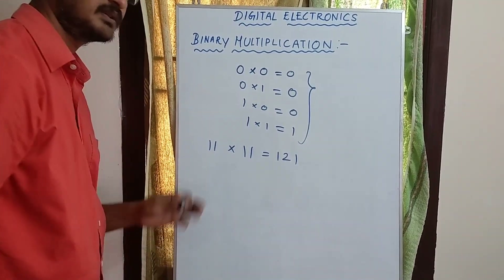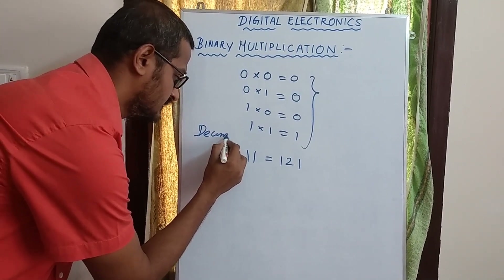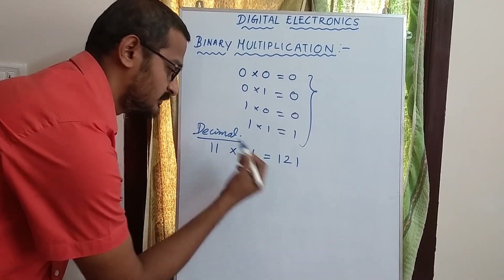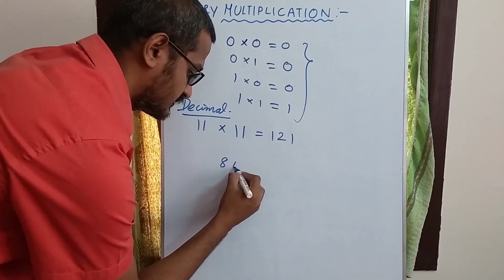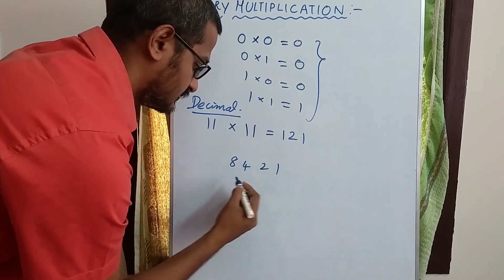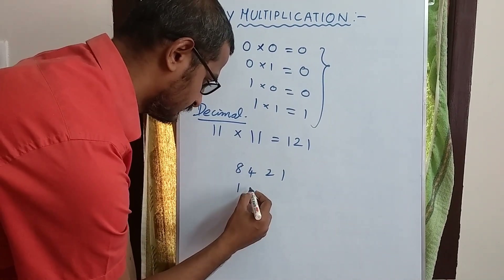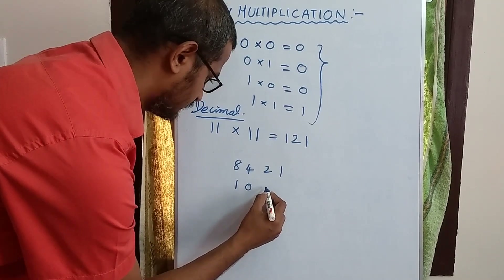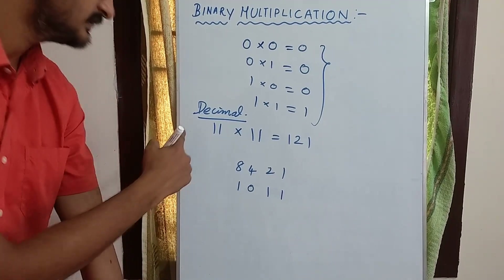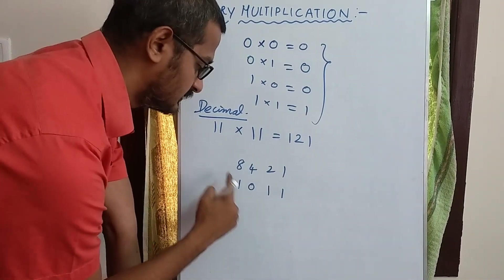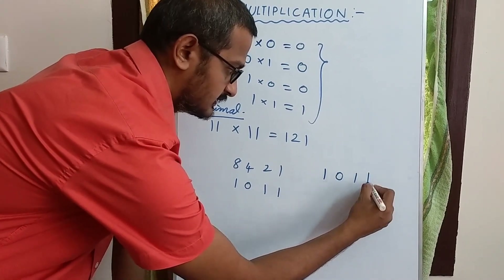11 times 11 equals 121 in decimal. So now we are going to convert to binary. 11 is the binary number. We write the 8421 code. So the 8421 code gives us: 8, 4, 2, 1. The value is 1 1, so we write 0 1 1 and 0 1 1 1.